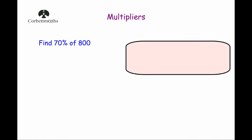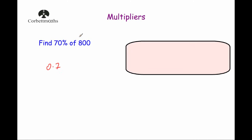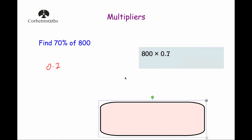So let's have a look at another question. We're going to find 70% of 800. To find 70% of 800, we just need to change our 70% into a decimal. So 70% is equal to 0.7. So we just need to do 800 times by 0.7, and we're going to get our answer of 560.